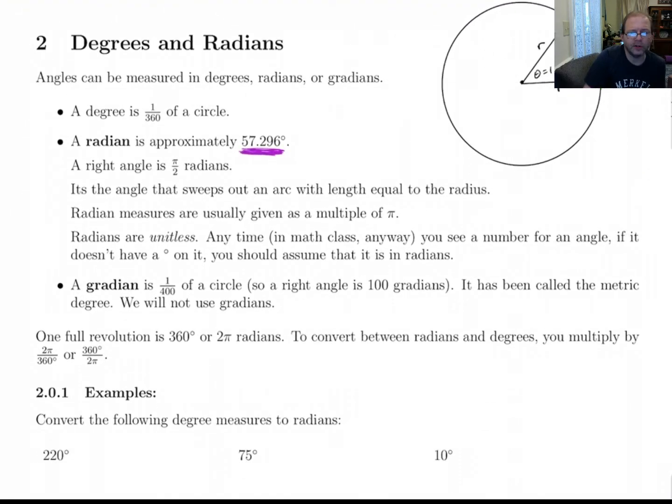Okay, radians are unitless. So if somebody gives you a number for an angle, then if it doesn't have a little degree symbol on it, you should assume that it means radians.